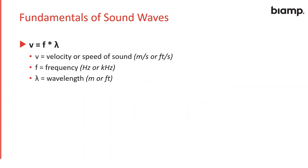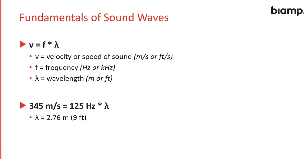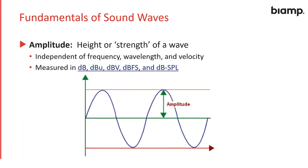We can calculate this with the V equals F lambda equation, where V equals velocity or speed of sound in meters per second or feet per second, F is the frequency, and lambda represents the wavelength. For an example, 345 meters per second is approximately the speed of sound at room temperature. A tone of 125 hertz is calculated to be about 2.76 meters or 9 feet. Amplitude is the height or the strength of a wave, and this is independent of frequency, wavelength, or velocity.